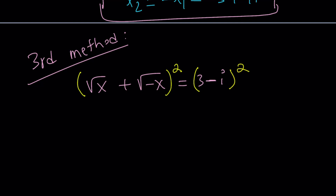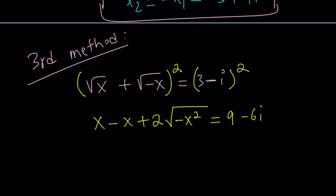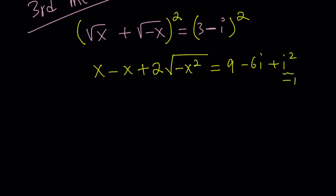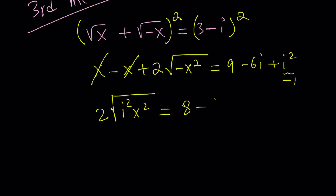When you expand (a + b)², you square the first term to get x, square the second term — something interesting happens: squaring square root of negative x gives you negative x, so they cancel out. Plus you get 2 times the square root of negative x squared, where you're multiplying x by negative x, giving a product of negative x squared. The right-hand side: (3 − i)² gives 9 minus 6i plus i squared, but i squared is negative 1, so that's 8 minus 6i. On the left, x minus x is 0, and we get 2 times the square root of negative x squared, which we can write as 2 times the square root of i squared x squared.